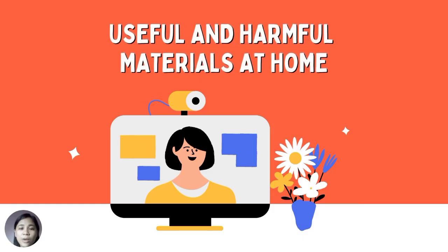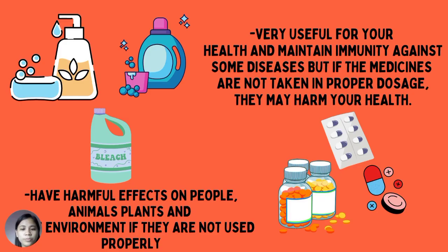Now we will learn about the useful and harmful materials at home. Some materials found at home can either be useful or harmful because of their physical and chemical properties depending on the materials used. Chemical properties are observed indirectly and become evident only when the material undergoes a chemical reaction or chemical change. They have harmful effects on people, animals, plants, and the environment if they are not used properly.